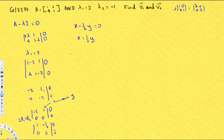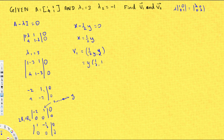Therefore, the eigenvector v1 is [(1/2)y, y]. Factoring out y gives y·[1/2, 1], so v1 = span{[1/2, 1]}. This is the eigenvector corresponding to λ1=3. Now we need to find the eigenvector for λ2=-1.